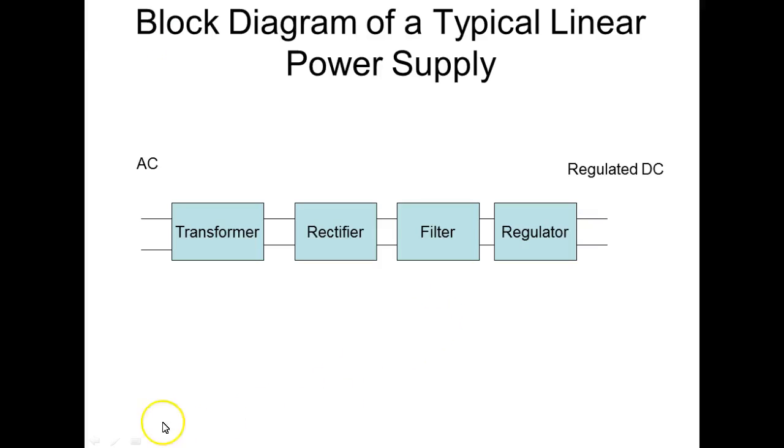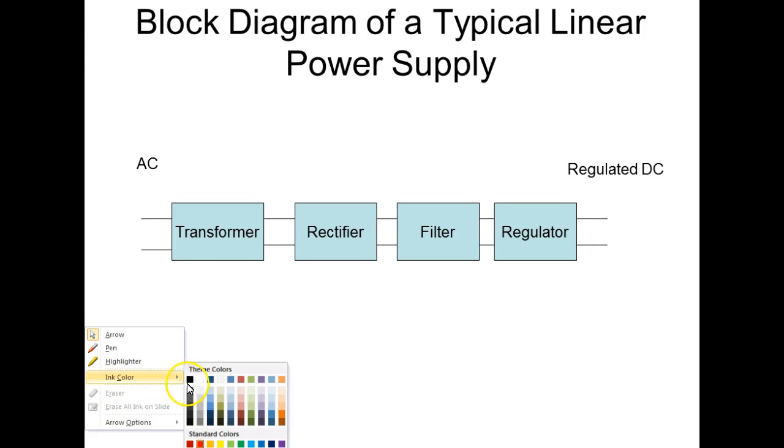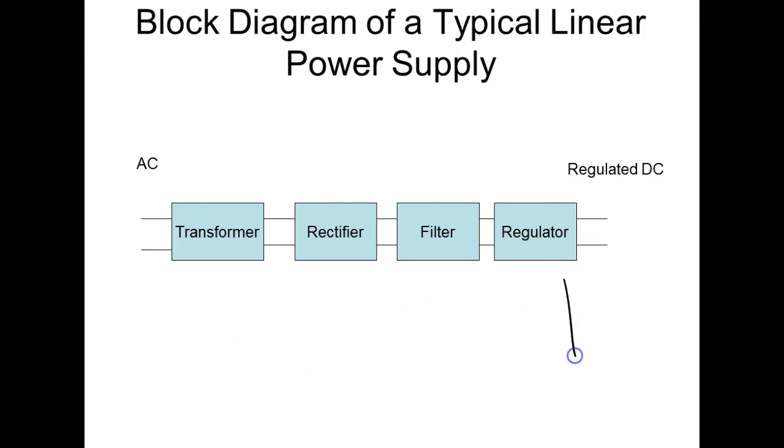When we look at our data sheets, we've got to operate that zener somewhere between here. So we've got IZ Max down here. If you exceed my IZ Max, the thing's going to burn up. If you operate it below IZK, it's going to go out of regulation. But IZ Max is not given in the data sheets. So how do we come up with IZ Max?